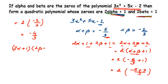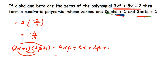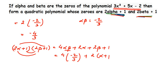Now I will find the product of the zeros: (2 alpha plus 1) into (2 beta plus 1). Opening the brackets using the distributive property: 2 alpha times 2 beta equals 4 alpha beta, plus 2 alpha, plus 2 beta, plus 1. Substituting alpha into beta equals minus 2 by 3: 4 times minus 2 by 3 equals minus 8 by 3. Taking 2 common from 2 alpha plus 2 beta gives 2 times (alpha plus beta).